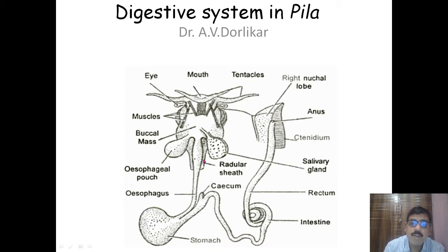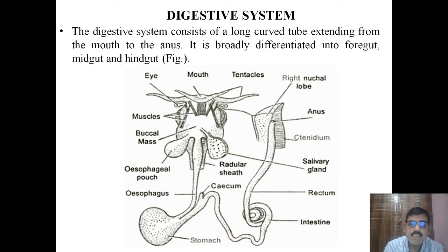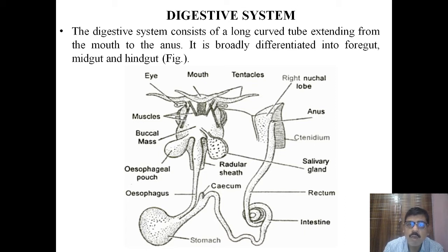The basic plan of the digestive system in Pila globosa comprises three parts: the foregut, midgut, and hindgut. The digestive system is a long curved tube that extends from the mouth up to the anus.